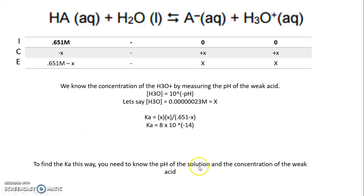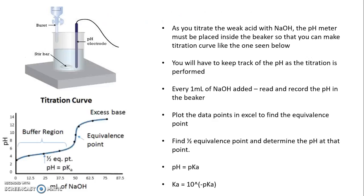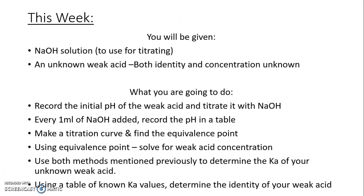To use this ICE chart method, you need both the initial pH and the concentration of the weak acid. Since we don't know the concentration going in — we're assuming we just found an unknown bottle of acid — we have to do the titration first to get the concentration before applying this method.